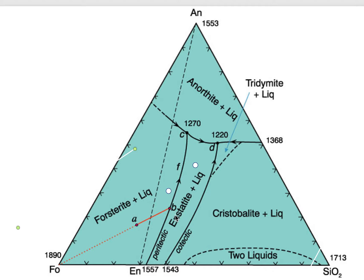Point B represents the point at which the first little bit of enstatite crystals will form. Notice that point B is a little more silica-rich than enstatite — it's rather similar to the peritectic liquid seen in the binary system of forsterite and silica. That silica-rich liquid will begin dissolving out forsterite and creating enstatite in the process. The liquid will move along this curve — this peritectic rather than a cotectic, because it has a reaction relationship.